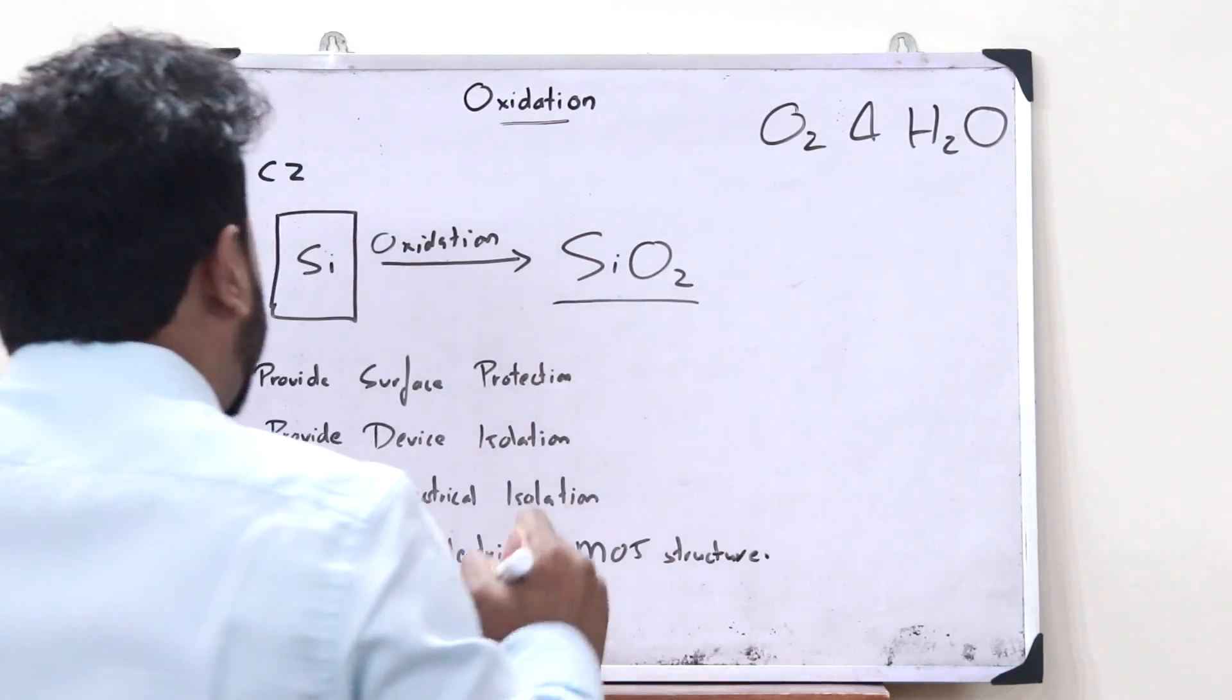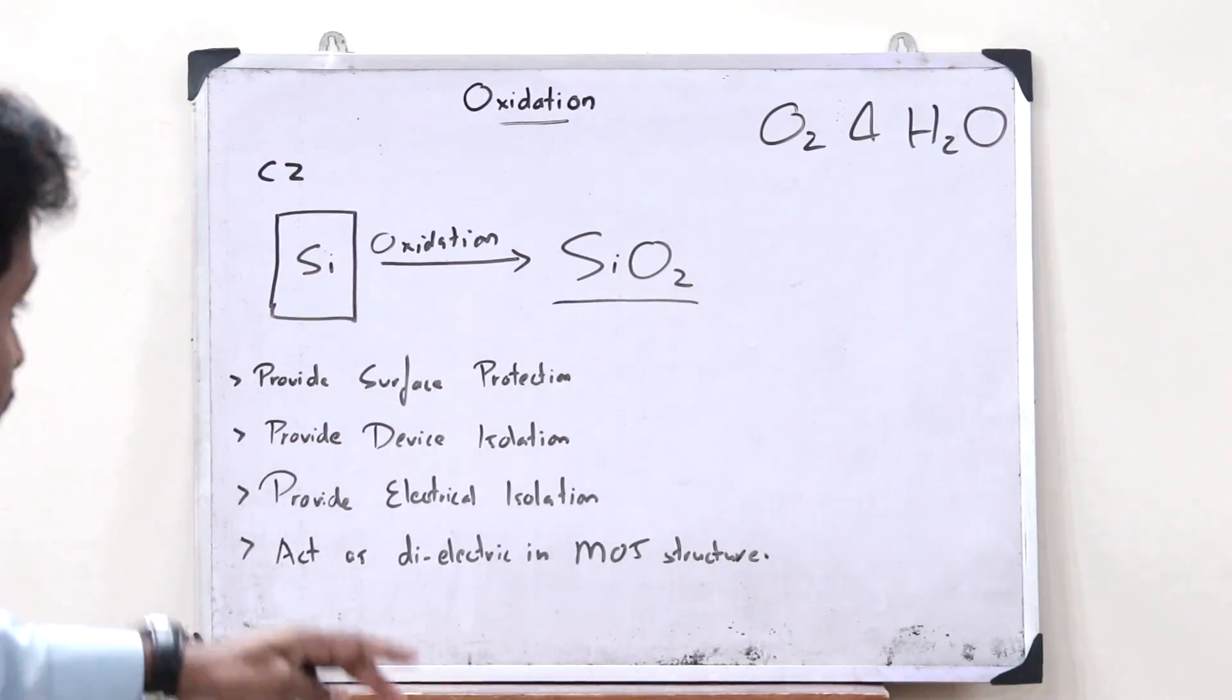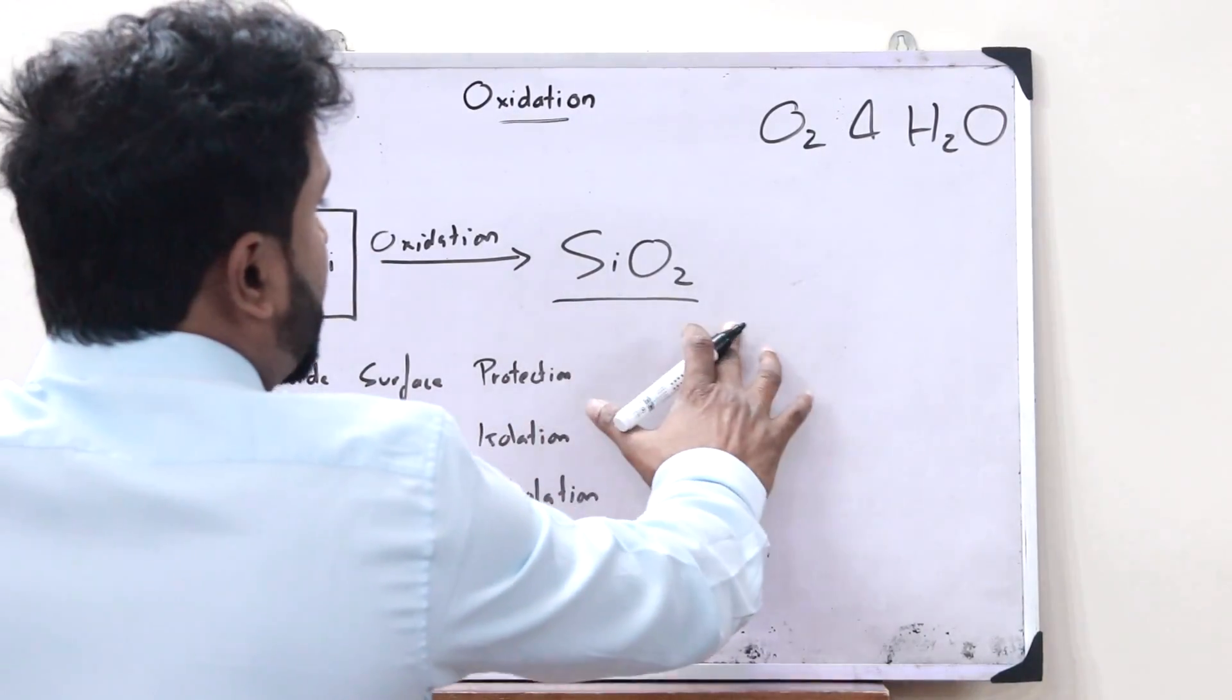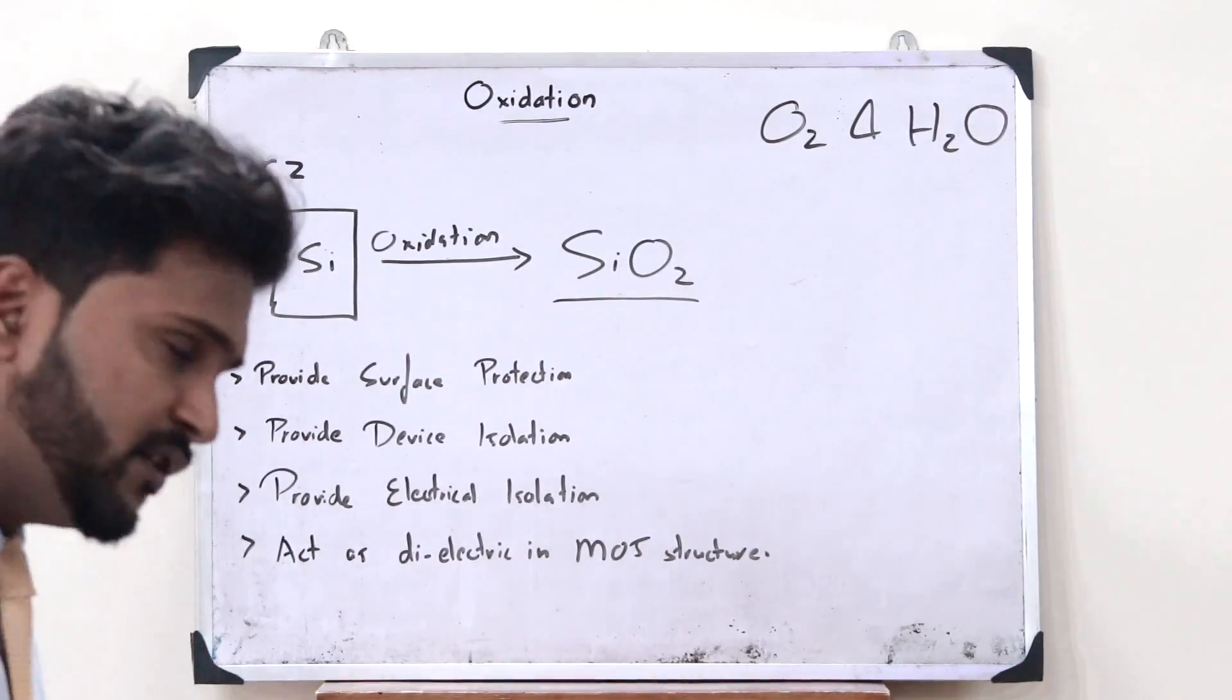Now we might have the obvious question: Why do we need to convert this particular silicon wafer into silicon dioxide, that is SiO2? There are certain uses.